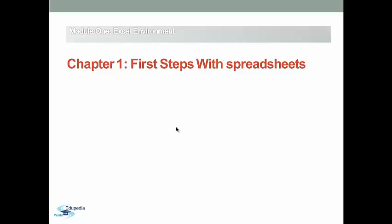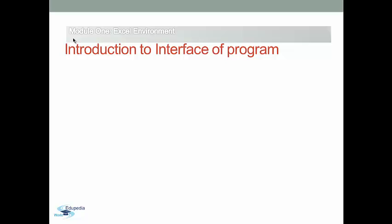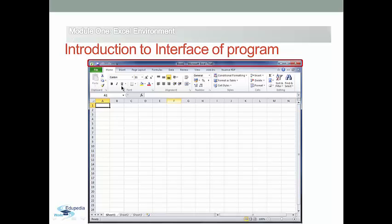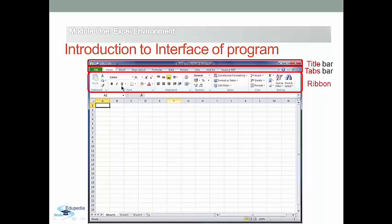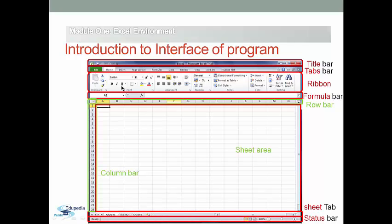Chapter 1 is the first steps with spreadsheets — introduction to the interface of the program. Before you can start learning to use Excel, you need to take a look at the user interface. This tutorial identifies the main parts of the Excel spreadsheet work area: from the top we have the title bar, tabs bar, the ribbon, formula bar, sheet area, row bar, column bar, sheet tab, and finally the status bar.